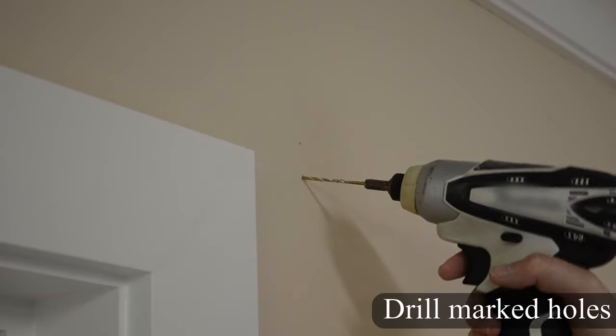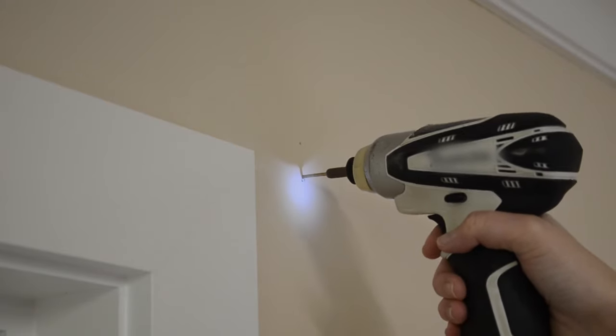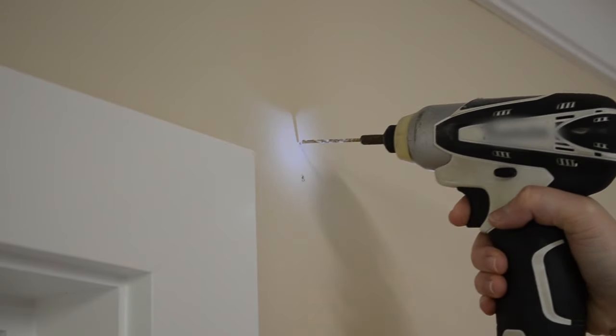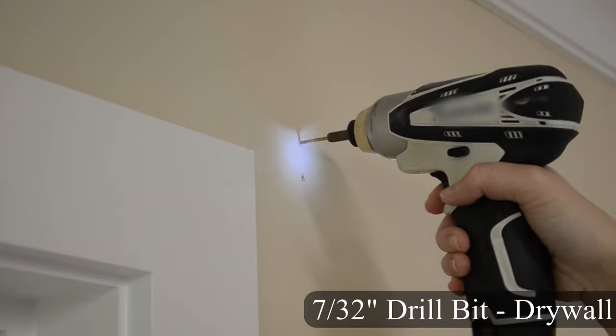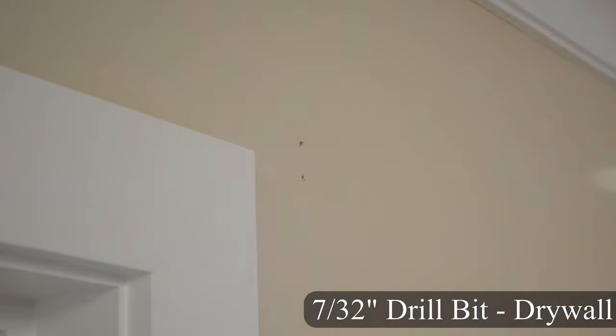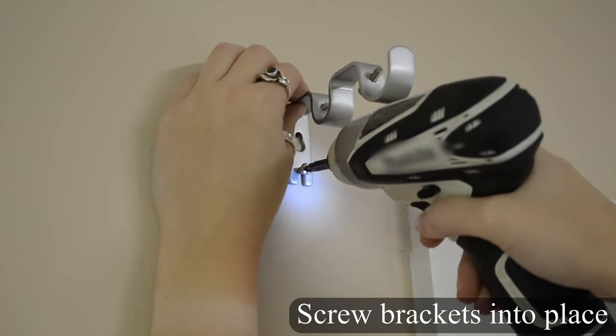Next, drill the marked holes and screw the brackets into place. For drilling into drywall, pre-drill holes for wall anchors using a 7/32 inch drill bit. Then insert the wall anchors before screwing the brackets into place. For drilling into wood, drill the screws into the pencil marks on the wall.